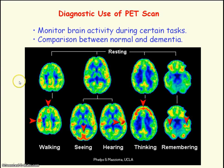A PET scan can be used to monitor brain activity during certain tasks. You can then compare brain activity for a normal healthy person against someone suffering from dementia.